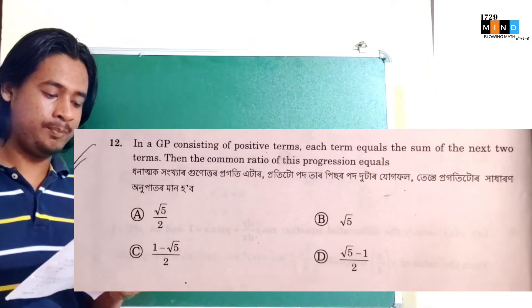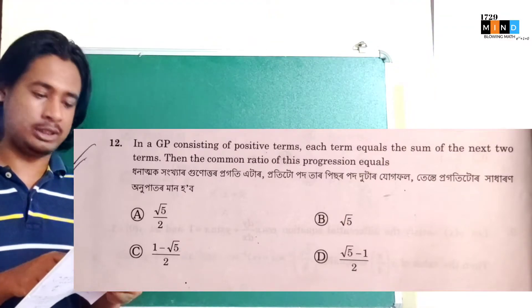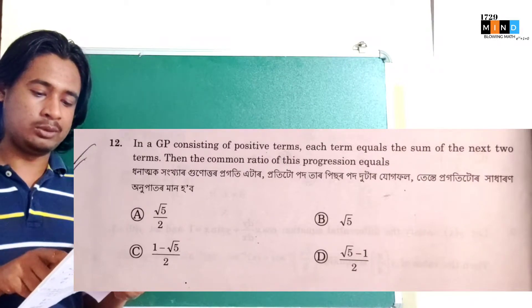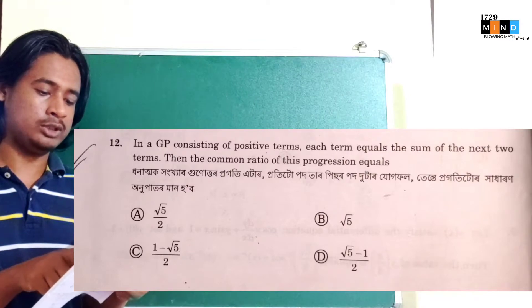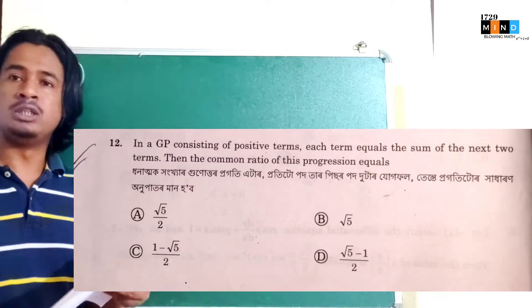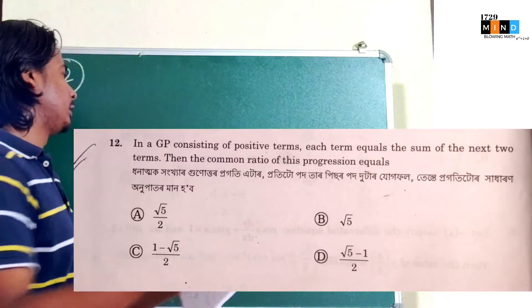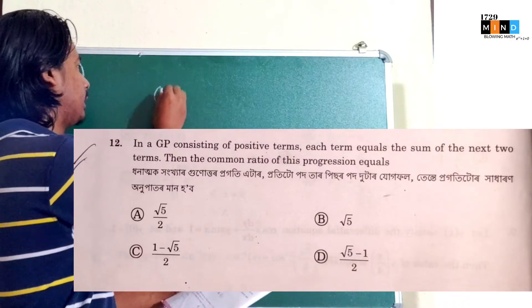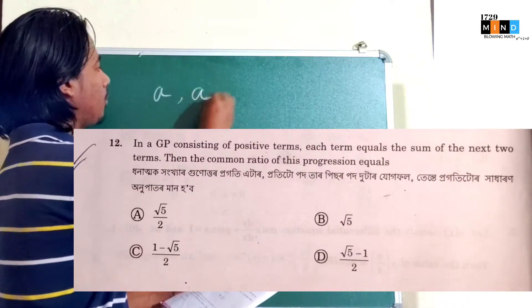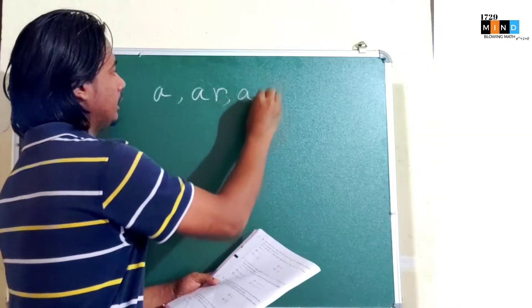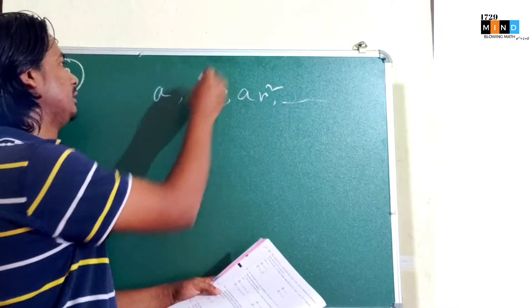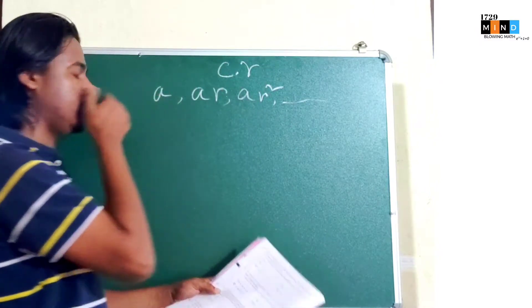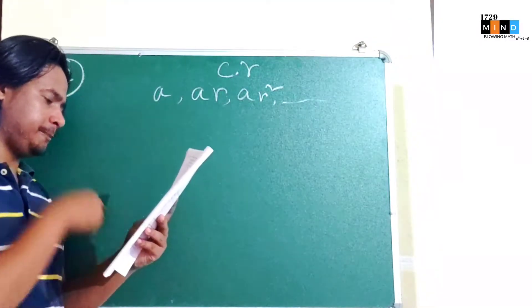In a GP consisting of positive terms, each term is equal to the sum of the next two terms. Then the common ratio of this progression is equal to. So GP value is geometric progression. First term, then the common ratio multiplied by AR, AR squared. Where R is the common ratio and A is the first term.